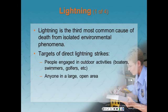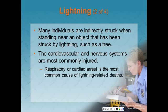Lightning injuries: there are an estimated 25 million cloud-to-ground lightning strikes each year in the United States, making lightning the third most common cause of death from isolated environmental phenomena. Targets of direct lightning strikes include people engaged in outdoor activities like boaters, swimmers, and golfers, and anyone in a large open area. Many individuals are indirectly struck when standing near an object struck by lightning, such as a tree — this is called the splash effect. The cardiovascular and nervous systems are most commonly injured, and respiratory or cardiac arrest is the most common cause of lightning-related deaths. The tissue damage pathway usually occurs over the skin rather than through it.